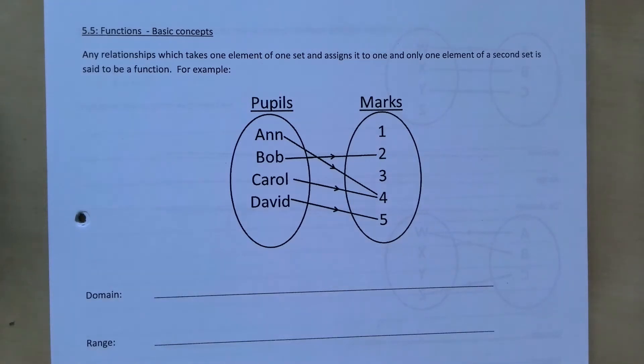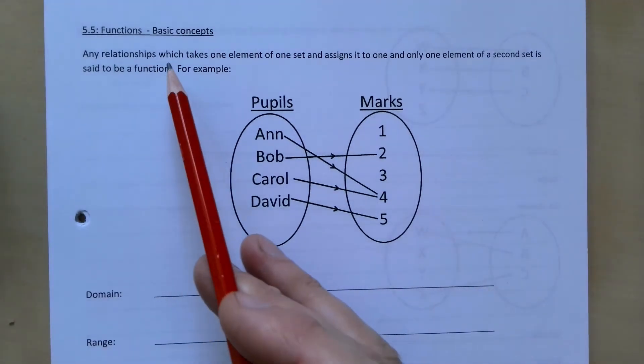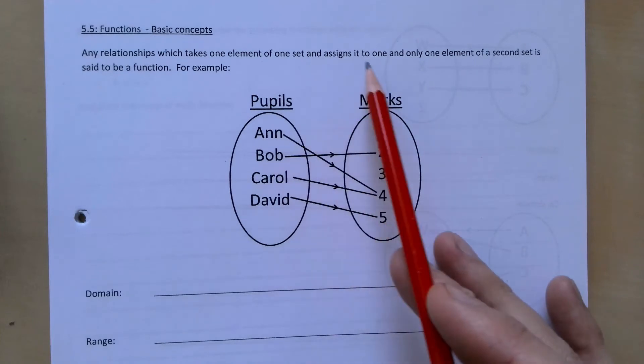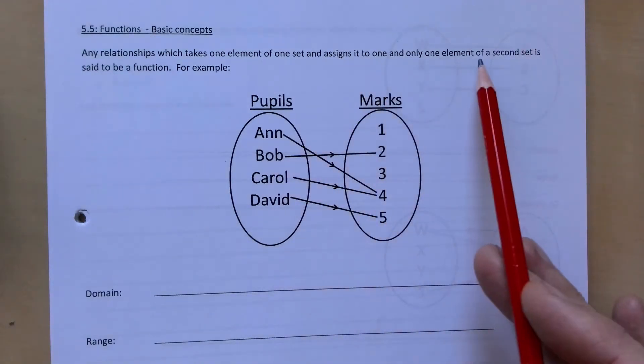Okay, this is A2 Pure Notes, and we're on Chapter 5, taking a look at functions. Any relationship which takes one element of one set and assigns it to one and only one element of a second set is said to be a function.